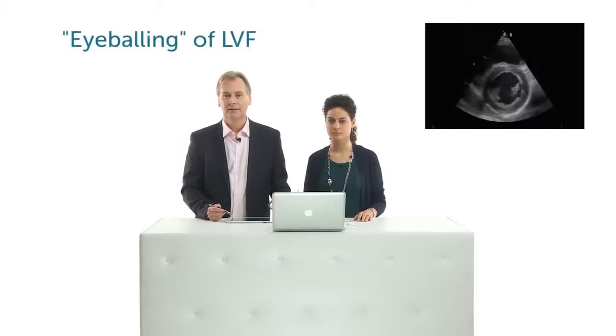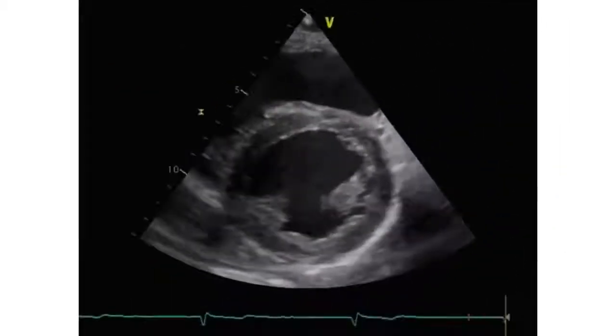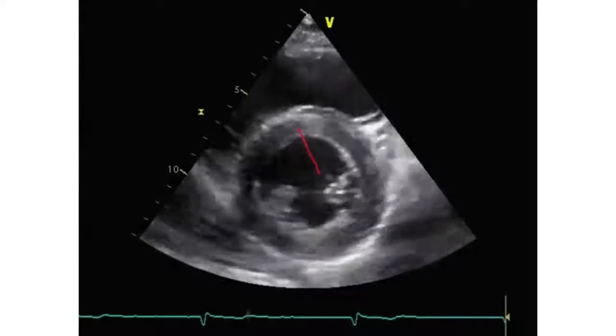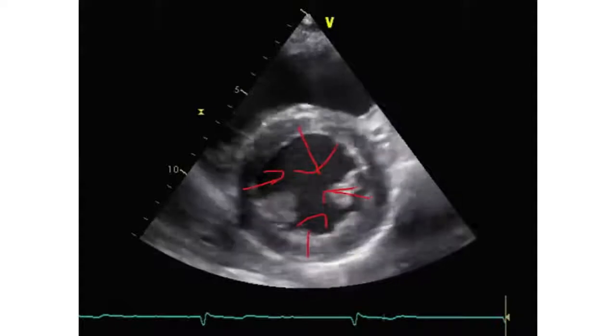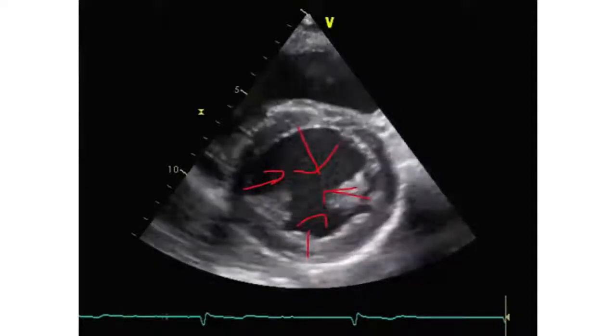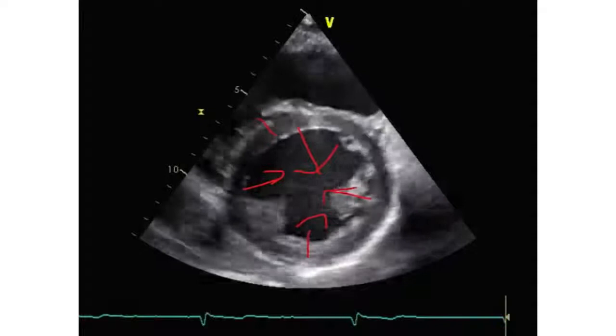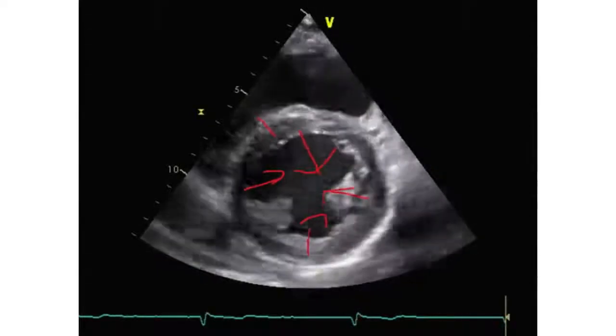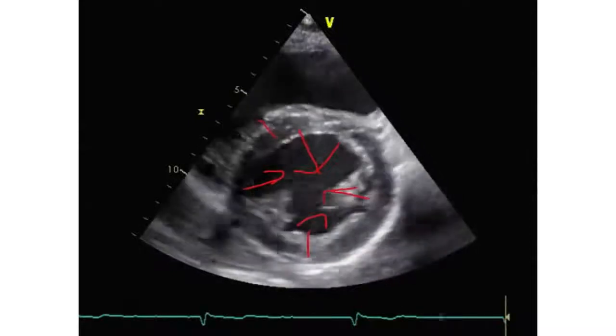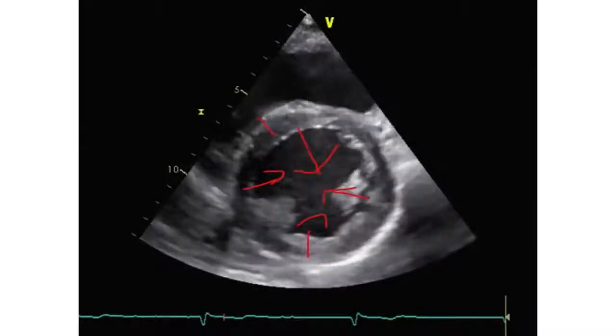We will now show you how to quantify left ventricle function just by looking at it — eyeballing. But to correctly assess left ventricle function, you have to know a few little tricks, and we'll show you what you should look for. First of all, you need to look at the inward motion of the ventricle on all sides. The next thing you look at is the thickening of the myocardium — notice that the myocardium gets thicker while it contracts. These two things are the principal criteria that you should be looking for in a short axis view.